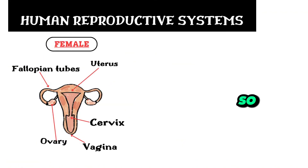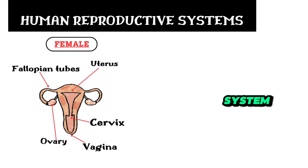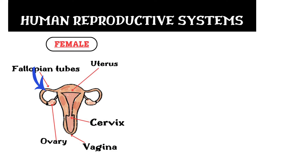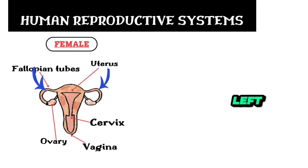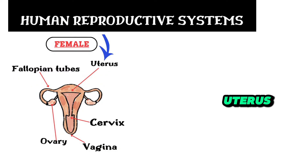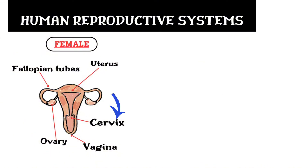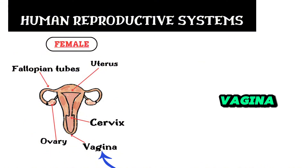We're going to talk about the following parts of the female reproductive system. We have the fallopian tube — they are on both sides, left and right. We have the uterus, we have the ovary, cervix, and vagina. Those are the female parts of the reproductive system.